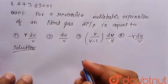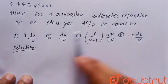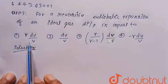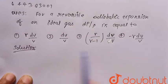Hello everyone, consider the given question. For a reversible adiabatic expansion of an ideal gas, dP/P is equal to - so these four options are given.